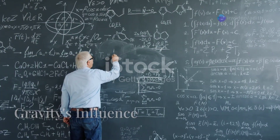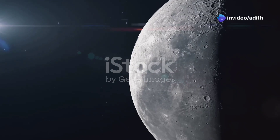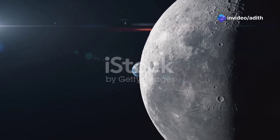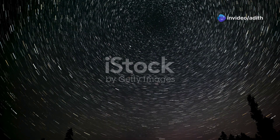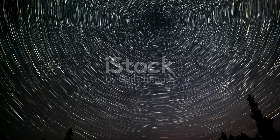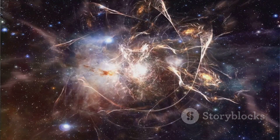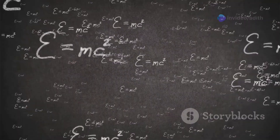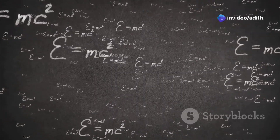General relativity expands on special relativity by including gravity in the picture. It explains how massive objects affect space and time. Einstein proposed that space and time are connected, forming a four-dimensional fabric called space-time.